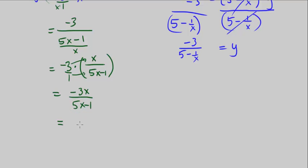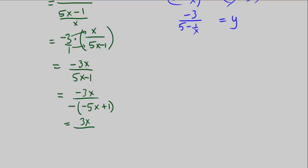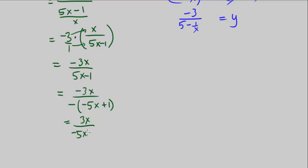Let's factor out a negative from the denominator. That gives us negative 3x over negative the quantity negative 5x plus 1. The negatives cancel, giving us 3x over negative 5x plus 1, or written neater, 3x over 1 minus 5x.